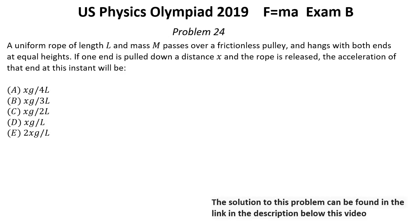Problem number 24. A uniform rope of length L and mass M passes over a frictionless pulley and hangs with both ends at equal heights. If one end is pulled down a distance X and the rope is released, the acceleration of that end at this instant will be next one.